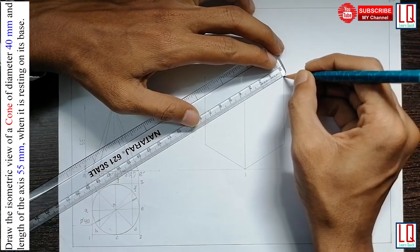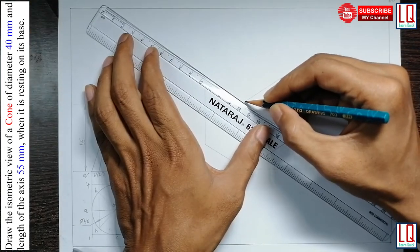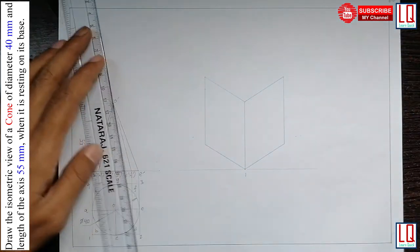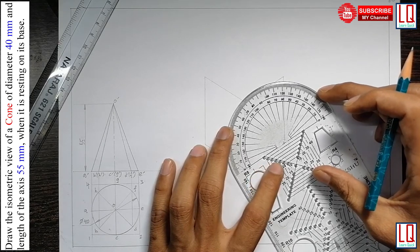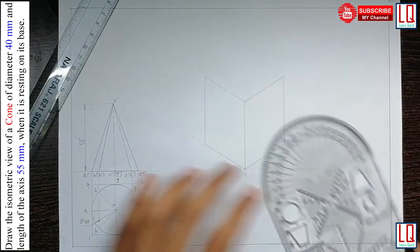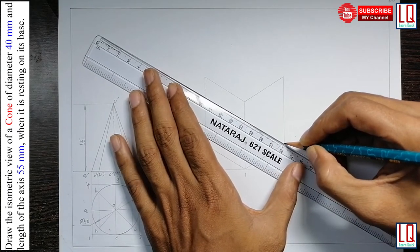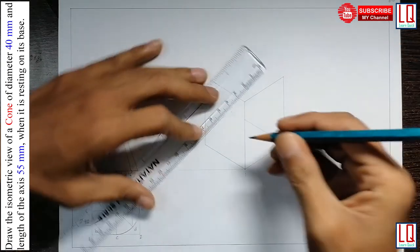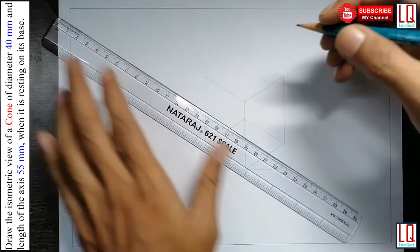Now, join these three corners 40 mm and 40 mm. Now, with the help of protractor, measure 60 degree to find the other corner and draw a line for 40 mm.